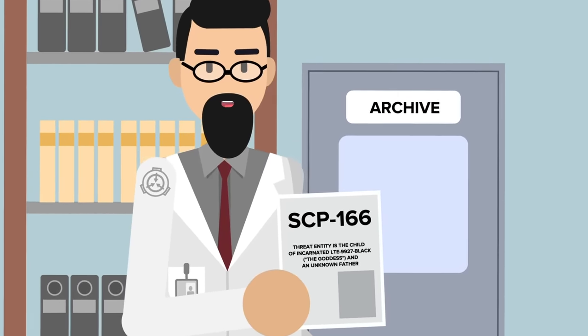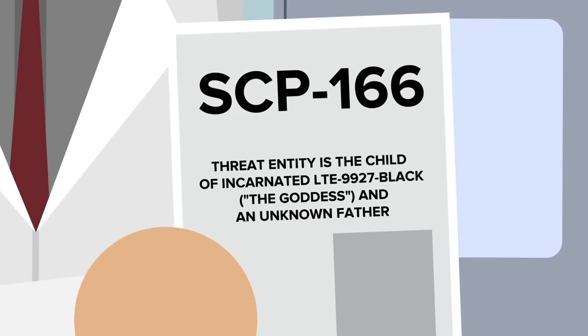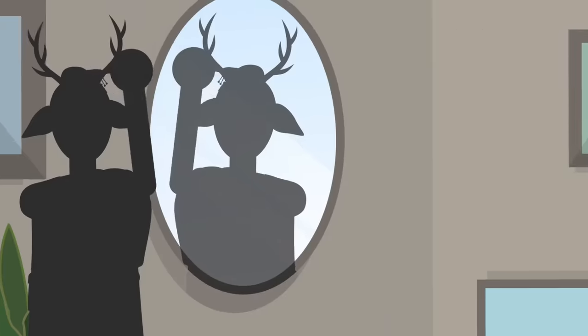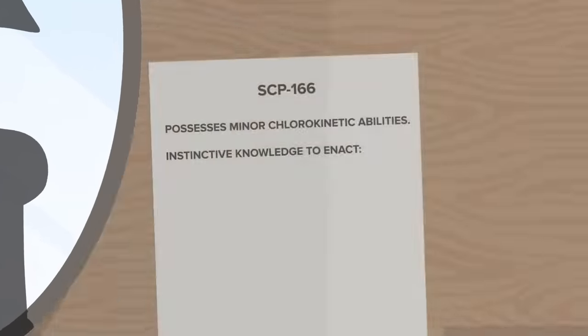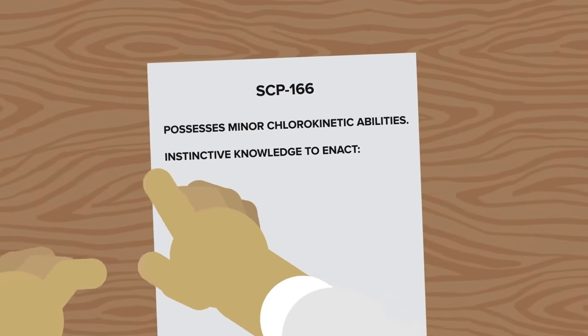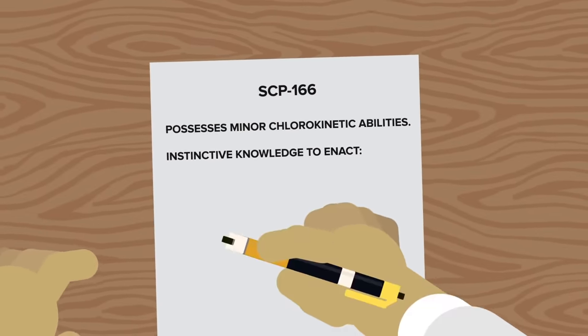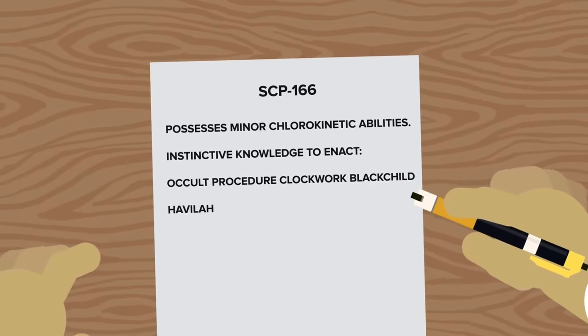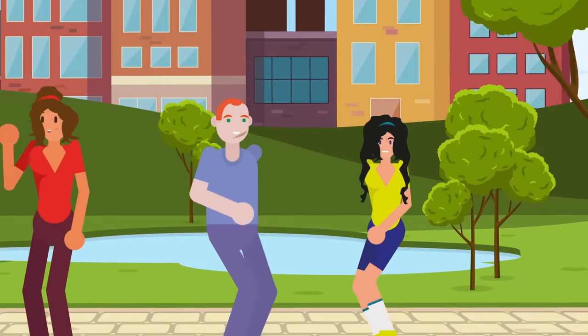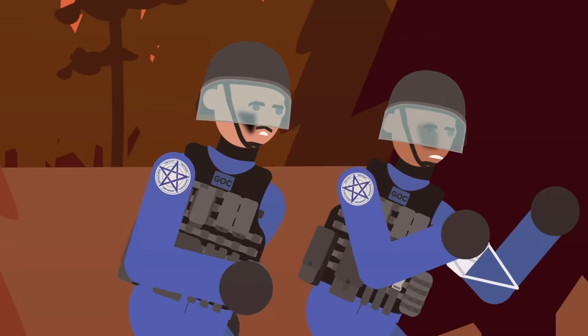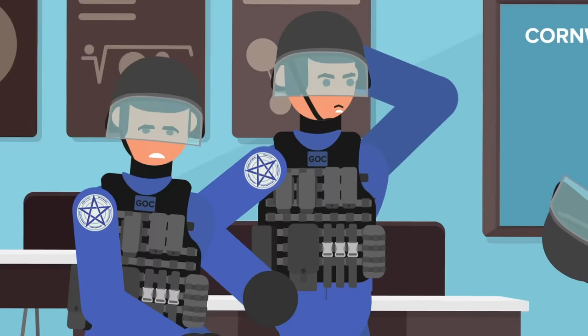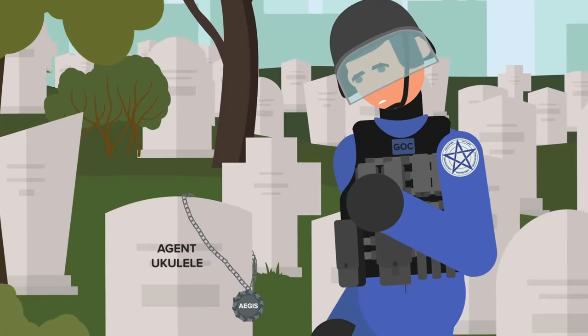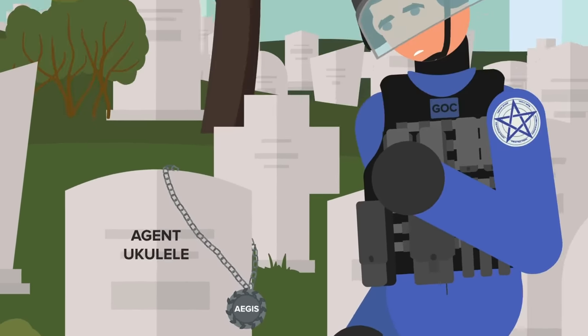The Goddess's file, which was received and archived by the SCP Foundation, has a portion describing SCP-166, which reads as follows: Threat Entity is the child of incarnated LTE 9927 Black, the Goddess and an unknown father. While it strongly resembles its mother and shares its animalistic features, it lacks the extreme bestial appearance of 9927 Black, possesses minor chlorokinetic abilities, but primary reason for Threat Entity classification is the instinctive knowledge and eligibility to enact Occult Procedure Clockwork Black Child Havilah, a worldwide ritual working that would irreversibly regress human civilization to Neolithic standards. Strike Team Lancelot neutralized 9927 Black in England during an operation which would later be known as the infamous Cornwall Incident, but were unable to confirm the liquidation of 9927 Black Child due to the death of the strike leader, Agent Ukulele. Ukulele was posthumously awarded the Silver Ages for his lifelong service to humanity.